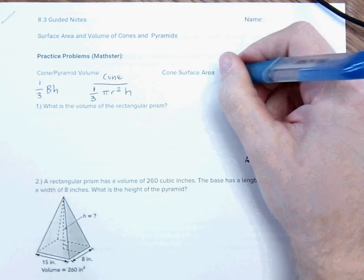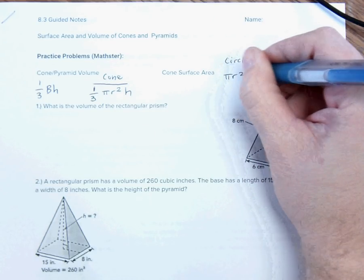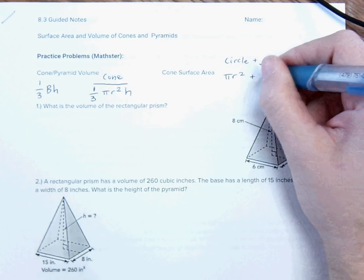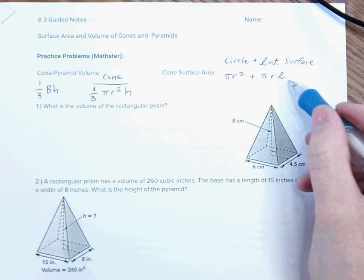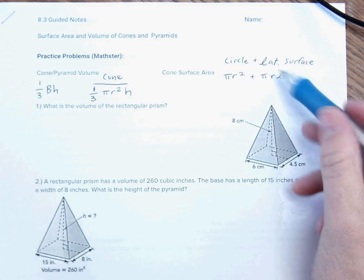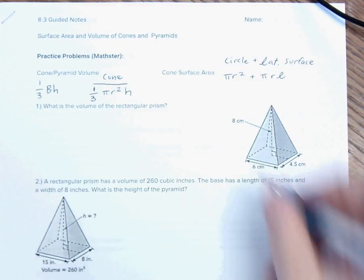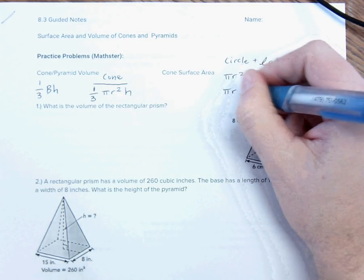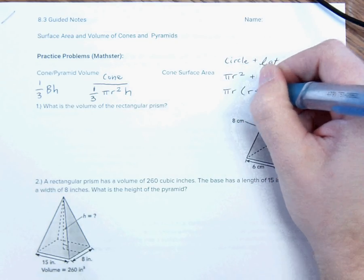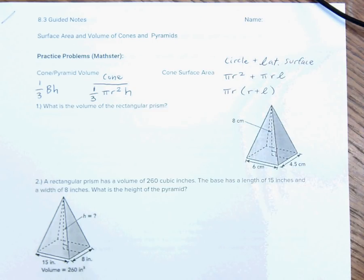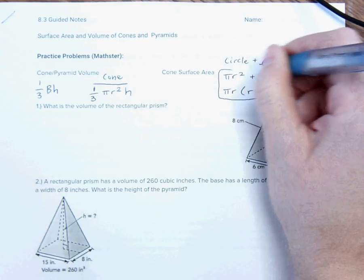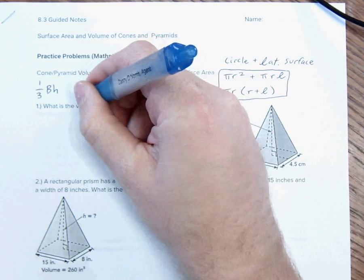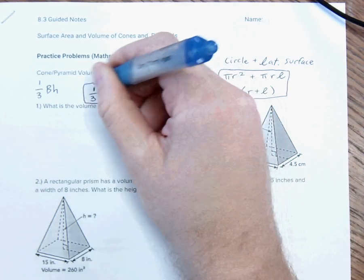And so, that is going to be pi r squared plus pi r l, where the l stands for the slant height of the cone. Sometimes it's written as pi r times (r plus l), and I'll get into when to use those, but these are our main equations for this section.